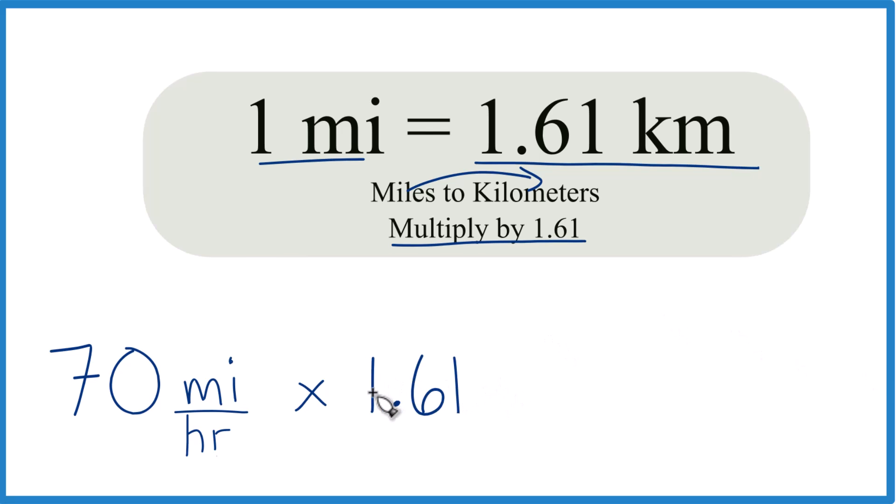But understand that it's 1.61 kilometers per one mile. So we can just put that over mile. So 70 times 1.61, that equals 112.7. And we have miles here and here.